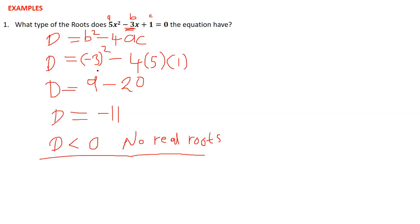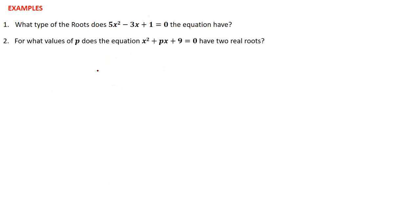Let's look at the second equation: for what values of p does the equation x squared plus px plus 9 equal zero have two real roots? If an equation has two real roots, we are talking about two distinct roots, meaning our discriminant is greater than zero. So b squared minus 4ac is greater than zero.